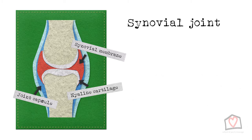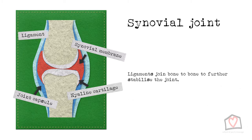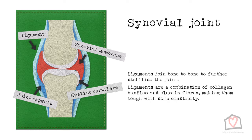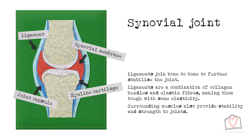In order to further stabilise the joint, ligaments join bone to bone, physically securing the joint from both outside the joint capsule through extracapsular ligaments, or within, intracapsular. They are a combination of collagen bundles and elastin fibres, making them tough but with some elasticity. Muscles that surround the joint are also crucial in providing stability and strength to the joints.